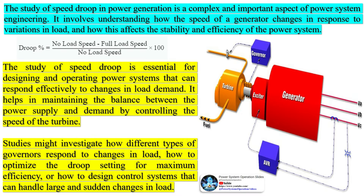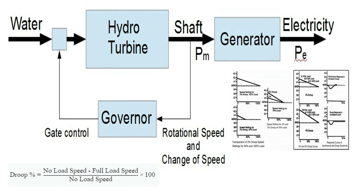The study of speed droop in power generation is a complex and important aspect of power system engineering. It involves understanding how the speed of a generator changes in response to variations in load, and how this affects the stability and efficiency of the power system. It helps in maintaining the balance between power supply and demand by controlling the speed of the turbine. For example, consider a generator with a rated speed of 1500 RPM. If the speed drops to 1425 RPM when loaded from no load to full load, the droop percentage is 5% — meaning the speed drops 75 RPM to 1425 at full load. This is known as speed droop.